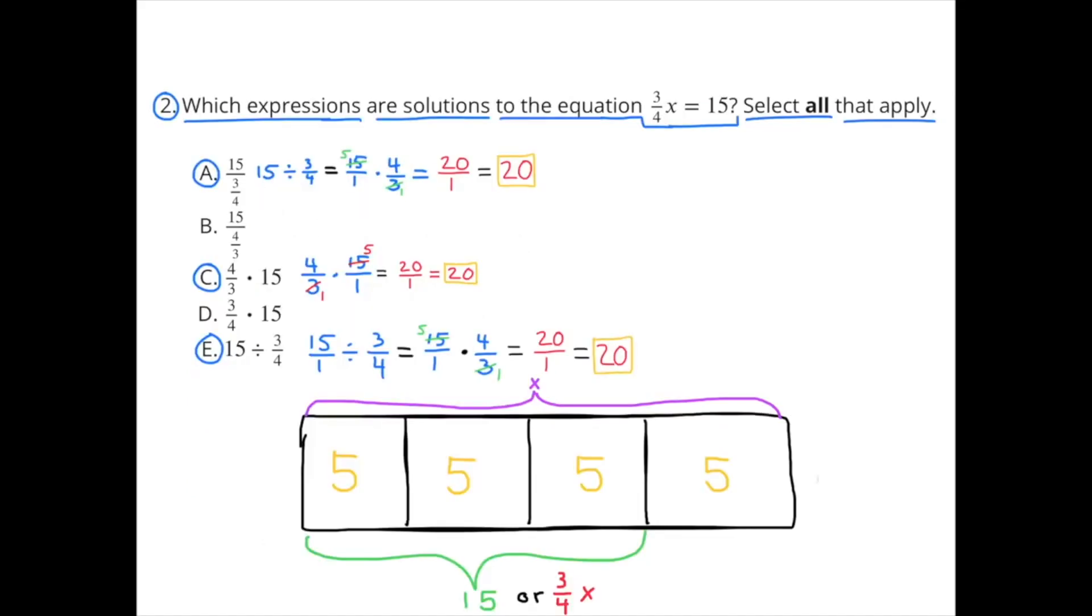Number 2: Which expressions are solutions to the equation 3 fourths x equals 15? Select all that apply. I selected A and E because they're pretty much the same thing. E says 15 divided by 3 fourths and that equals 20. And A says 15 divided by 3 fourths because 15 over 3 fourths means 15 divided by 3 fourths and that equals 20.